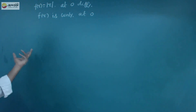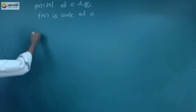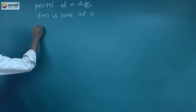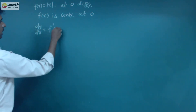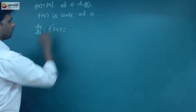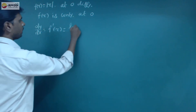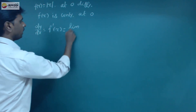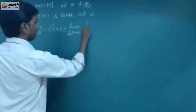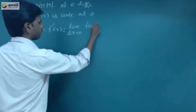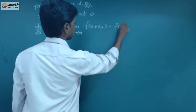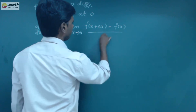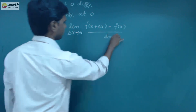To check differentiability, we check whether the left-hand side limit and right-hand side limit are the same. The formula is: dy/dx = f'(x) = limit as Δx → 0 of [f(x + Δx) − f(x)] / Δx.